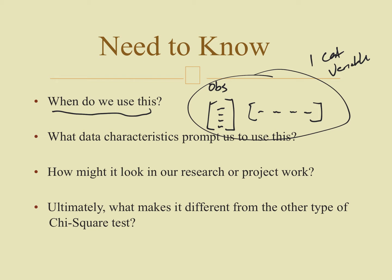What data characteristics prompt us to use this test? It really comes down to one versus two categorical variables, which we'll get into more. How might it look in our research work, and ultimately what makes it different from the other Chi-Square test — which again is that one or two categorical variables distinction.